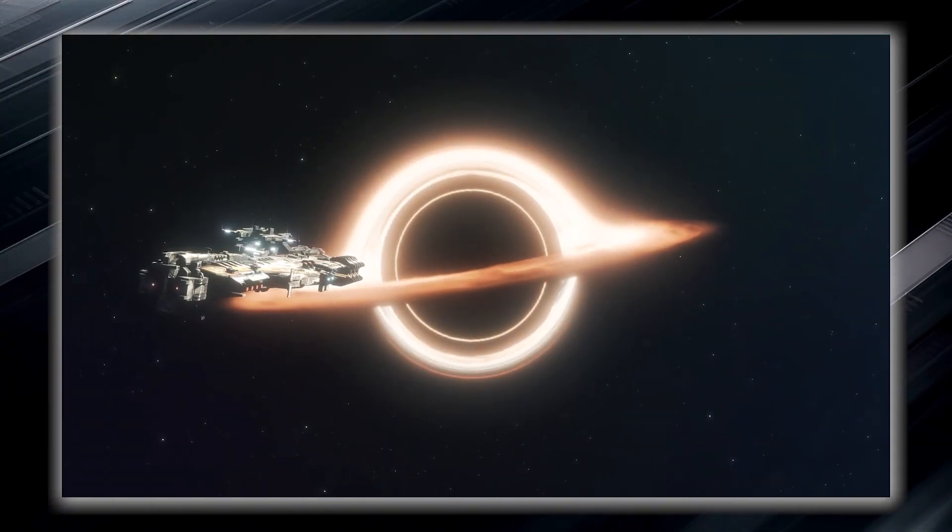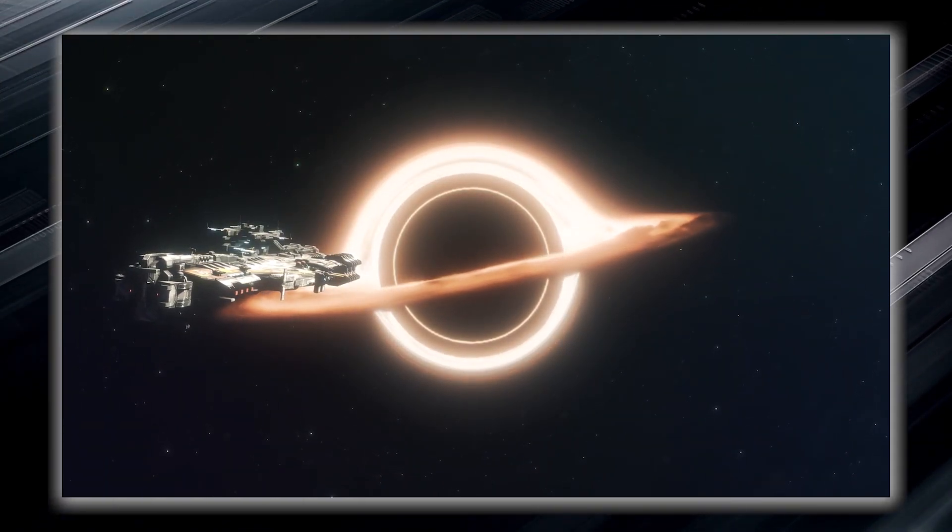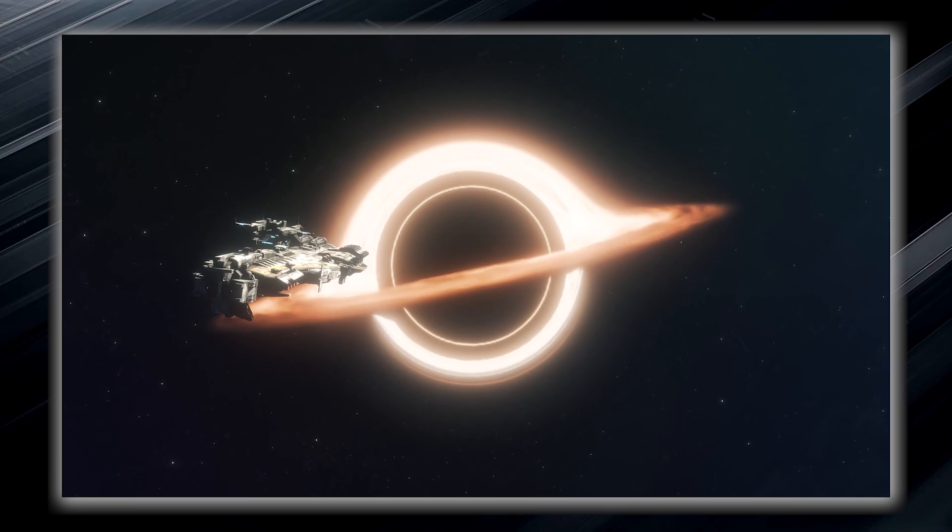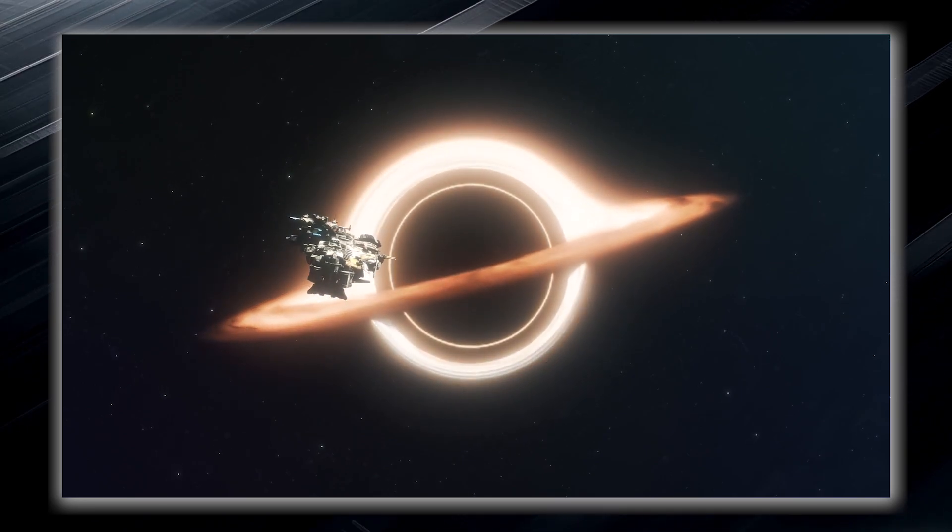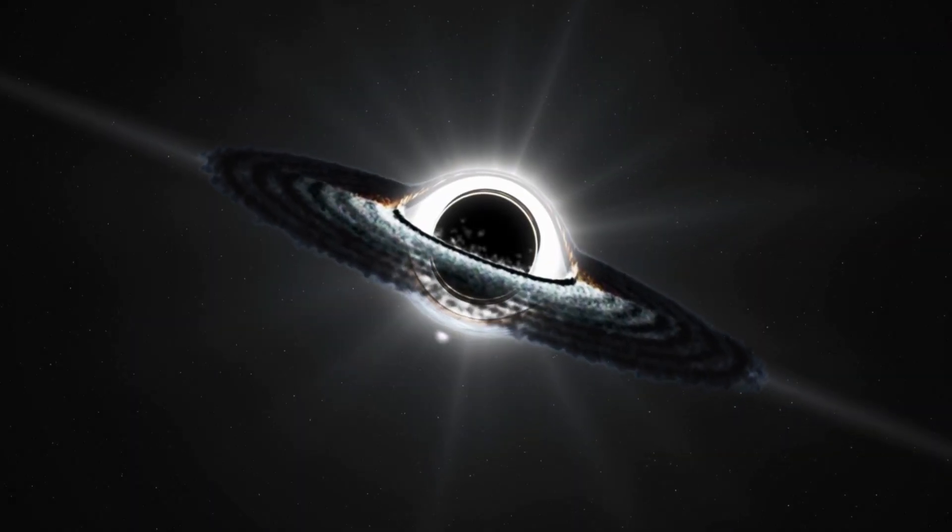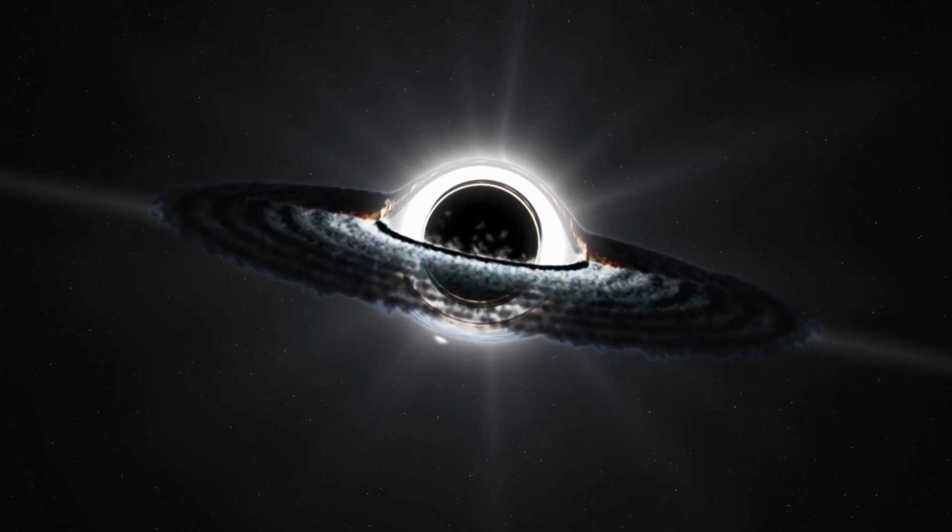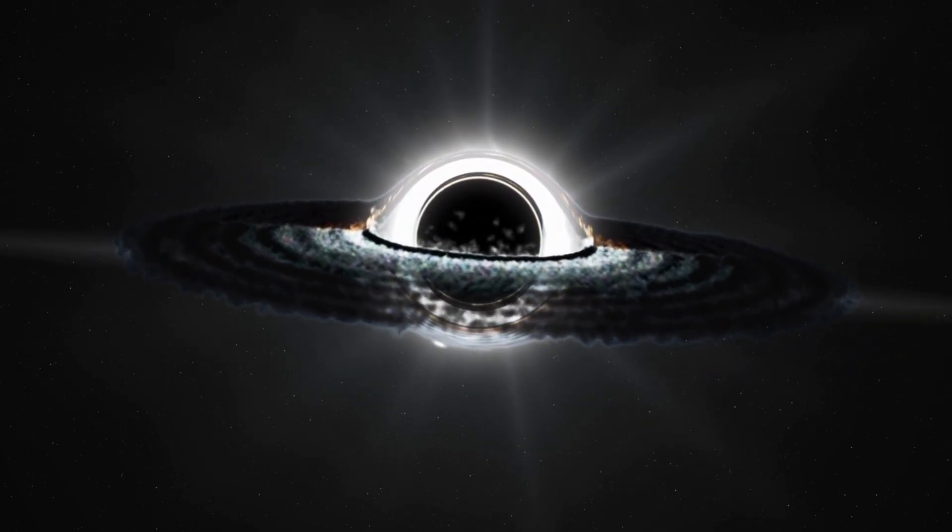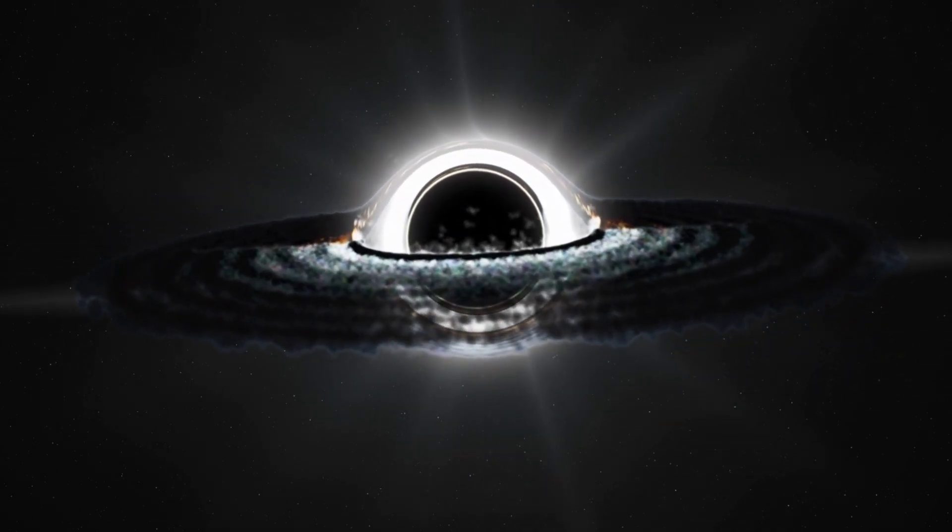Once something, such as an unfortunate spacecraft or even light, crosses its boundary, it can never escape the clutches of the black hole. The event horizon forms an invisible force field that holds everything within it, including light, which is normally considered the fastest entity in the universe.